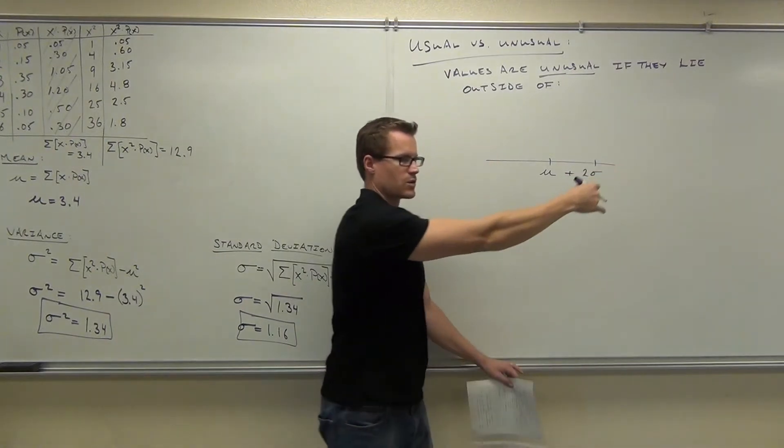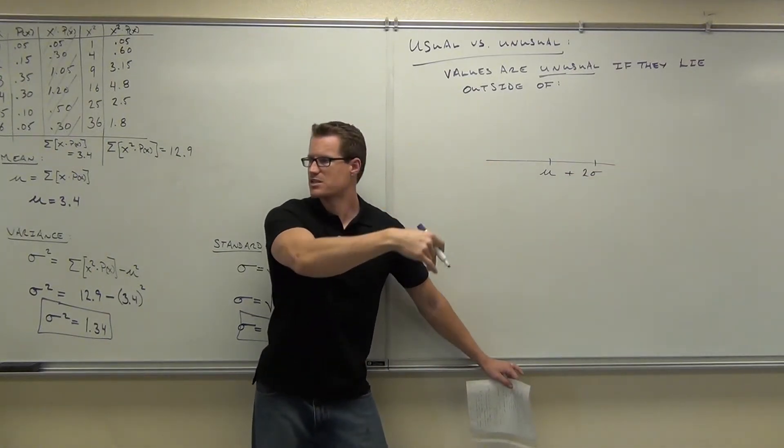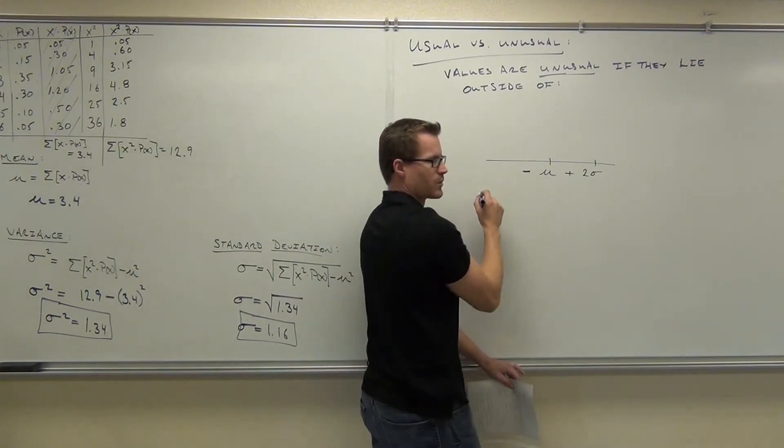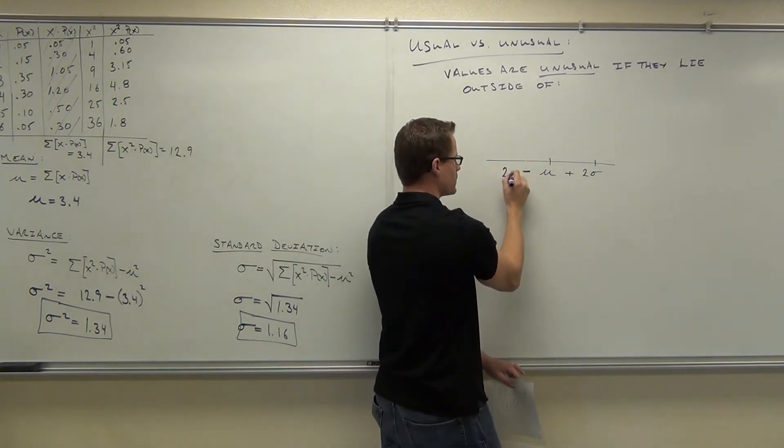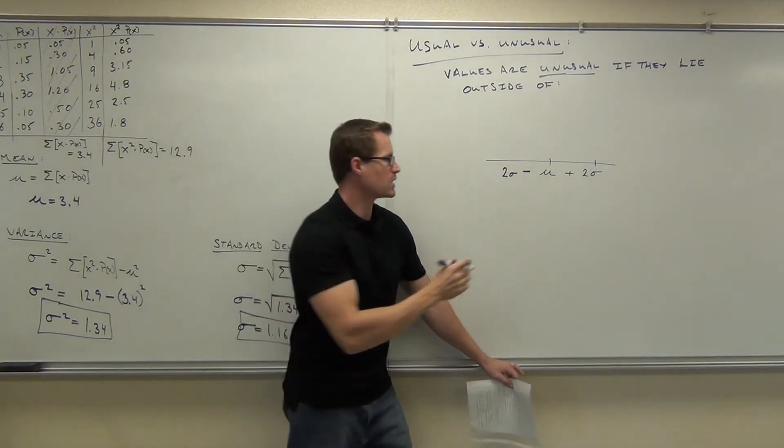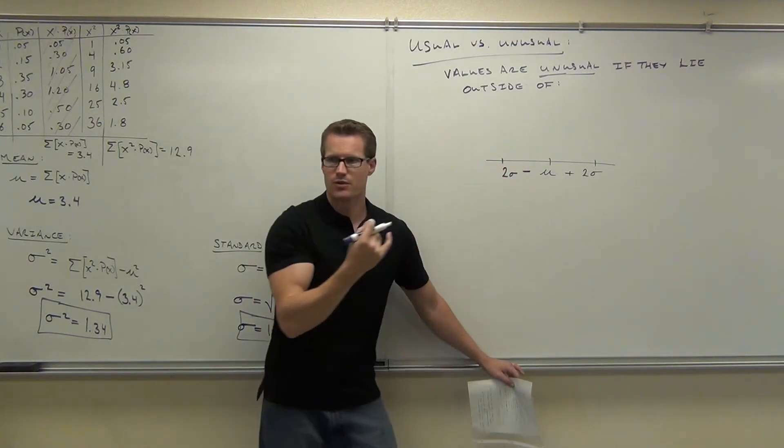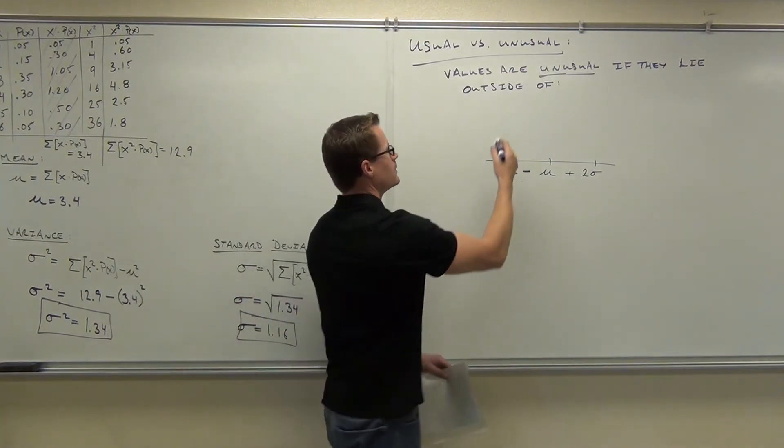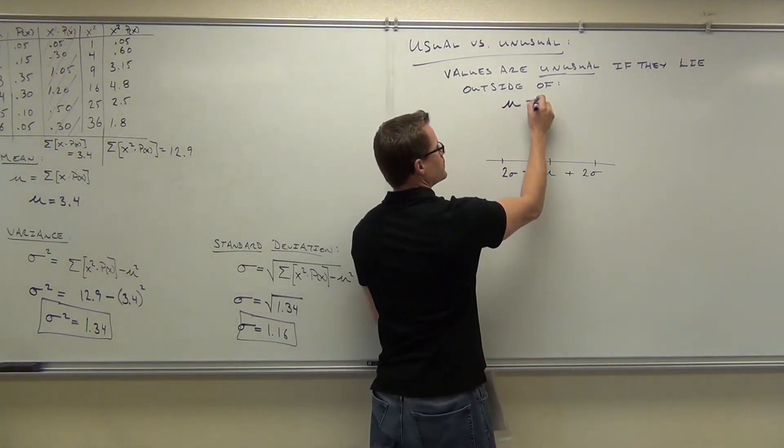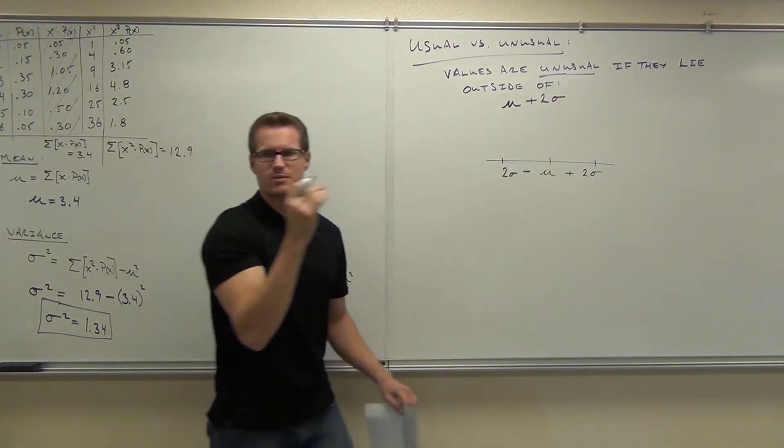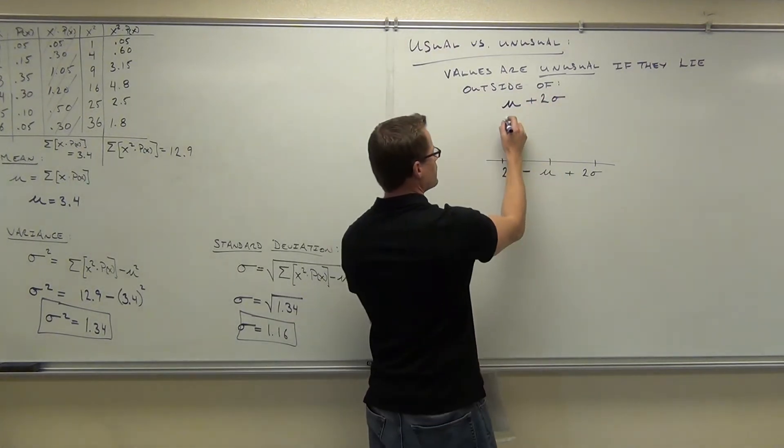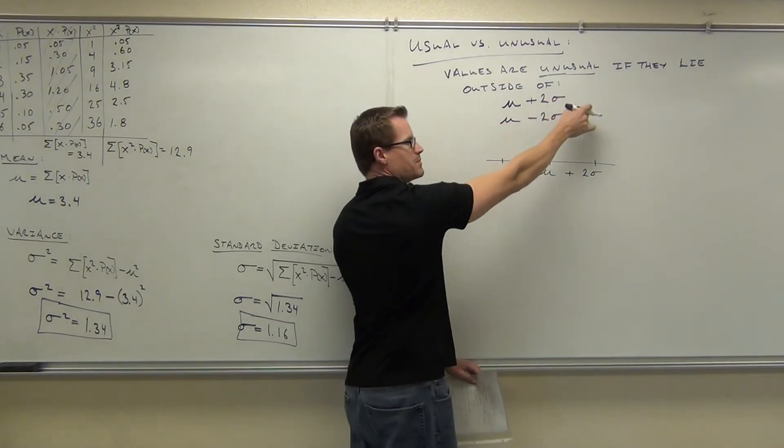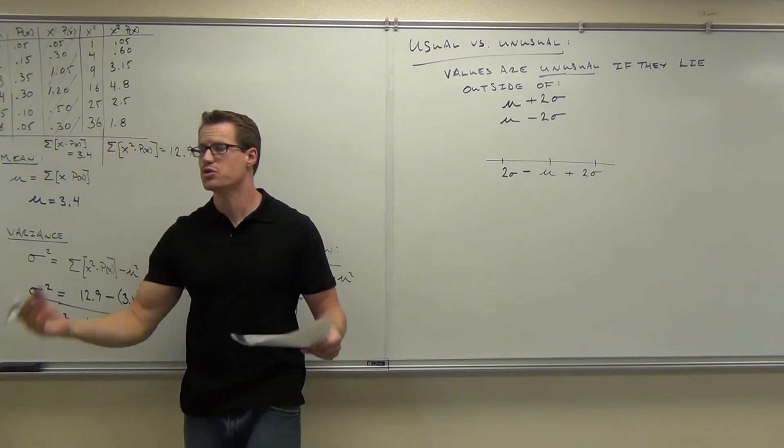That's going to give us the range of usual values on the right-hand side. The maximum that we could get. If we subtract two standard deviations, I know I'm writing this backwards, but hopefully you see it. If we subtract two standard deviations, we're going to get the lower limit for the range of our usual values on the left-hand side. So outside of μ plus 2σ, that's two standard deviations, and μ minus 2σ, that gives us the maximum and the minimum values that we have for considered usual versus unusual.